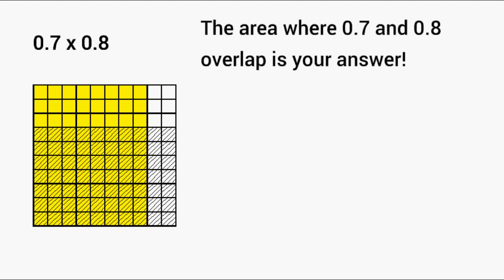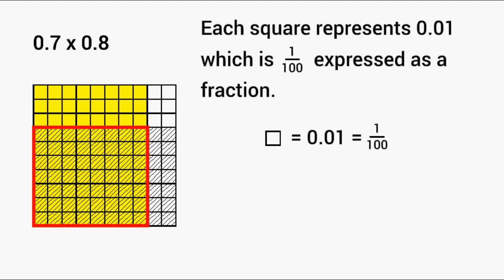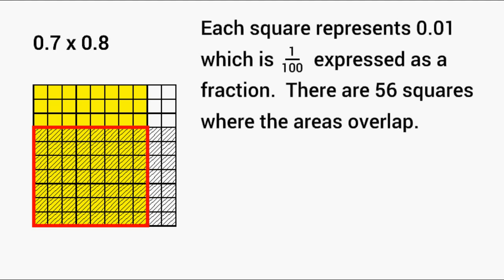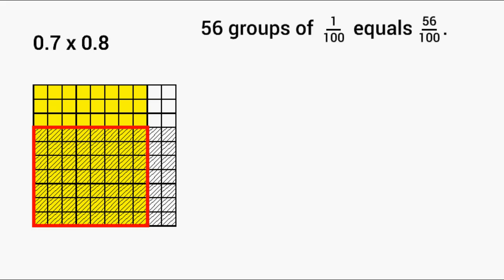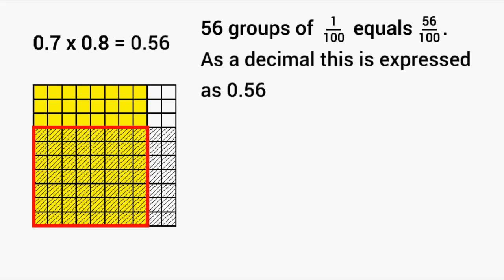Remember, each individual square represents one one-hundredth of a whole. If you were to count everything that was inside the red borders, we have 56 of those squares, so we have a total of 56 hundredths, which is the product of 0.7 and 0.8.